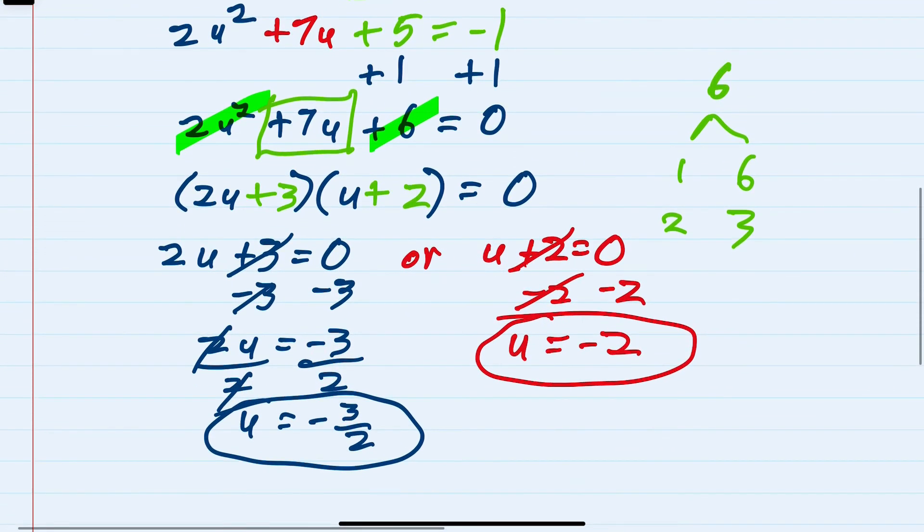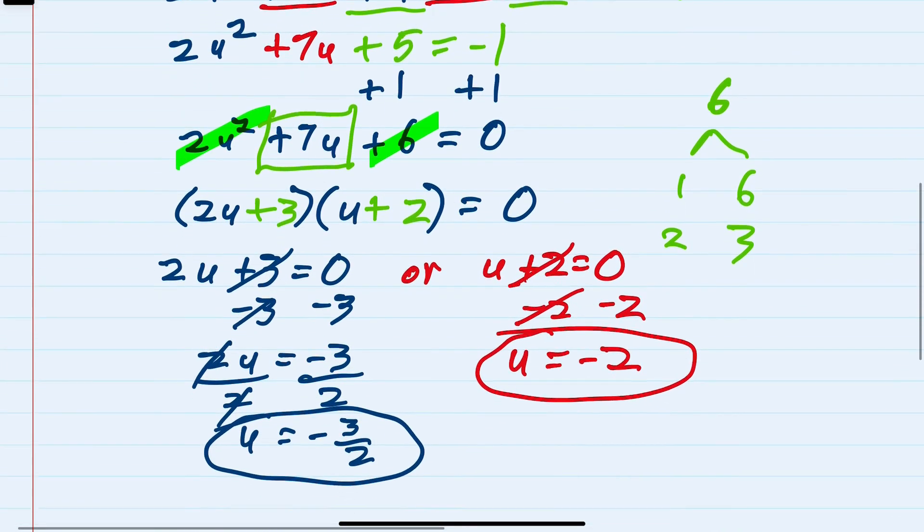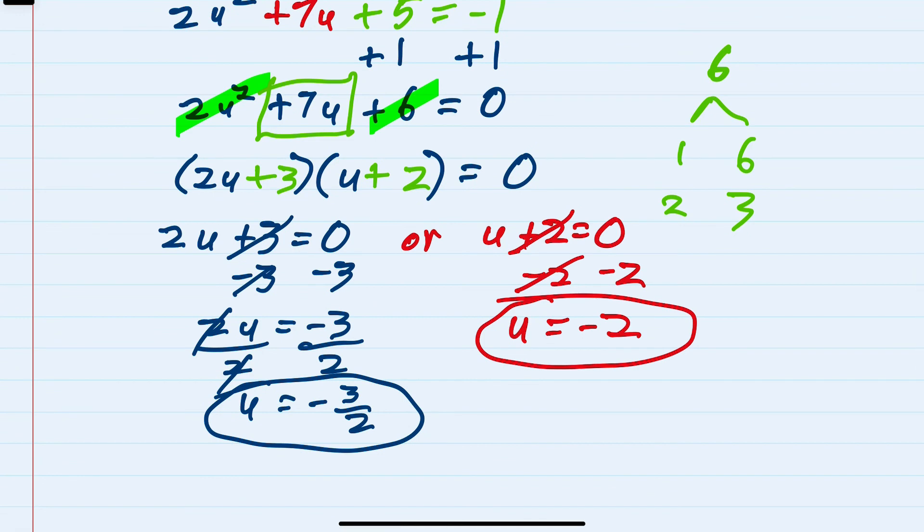this second solution of u equals negative 2, if I plug that in, that will give me a 0 in the denominator, which means it is not a valid solution. So even though we have two solutions, we've eliminated one as causing a 0 in the denominator. So we're left with only one solution. u is negative 3 halves.